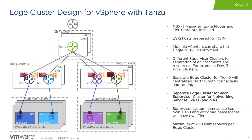Option four in this supported topology is more of a separation of environments, where each supervisor cluster could represent an environment like test, dev, or production. Each supervisor cluster is tied to a dedicated edge cluster for their networking services. In this option, we still share the same edge cluster for forwarding north-south traffic, but each supervisor cluster has guaranteed resources for its dedicated edge cluster. You are more assured that workloads in test don't push aside workloads in production on a given edge cluster.